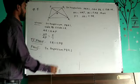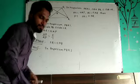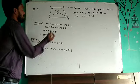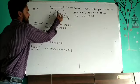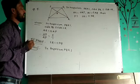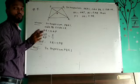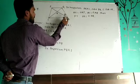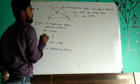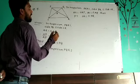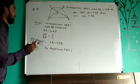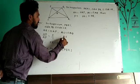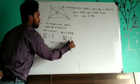In the quadrilateral with PQ parallel to SR, we consider triangle AQP and triangle ASR. AR upon AP is 5 upon 1. Also given that AS is equal to 5 AQ, therefore AS upon AQ is equal to 5 upon 1.